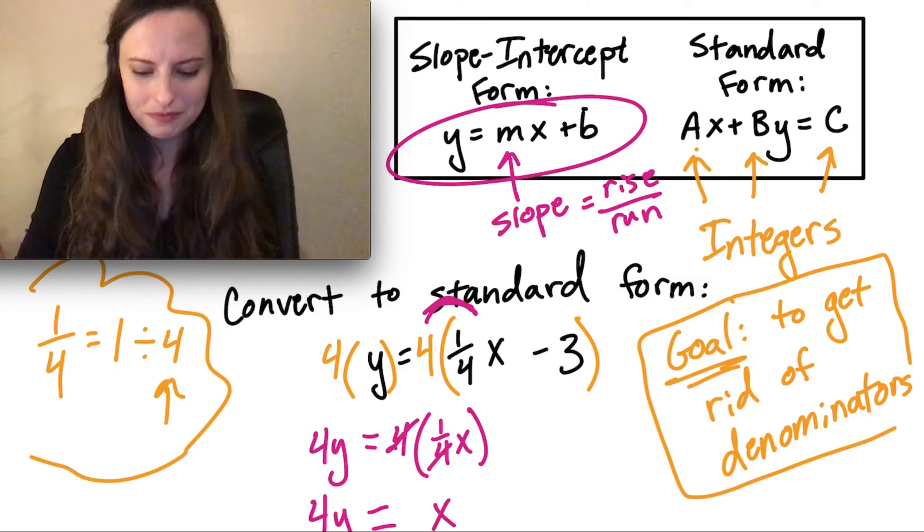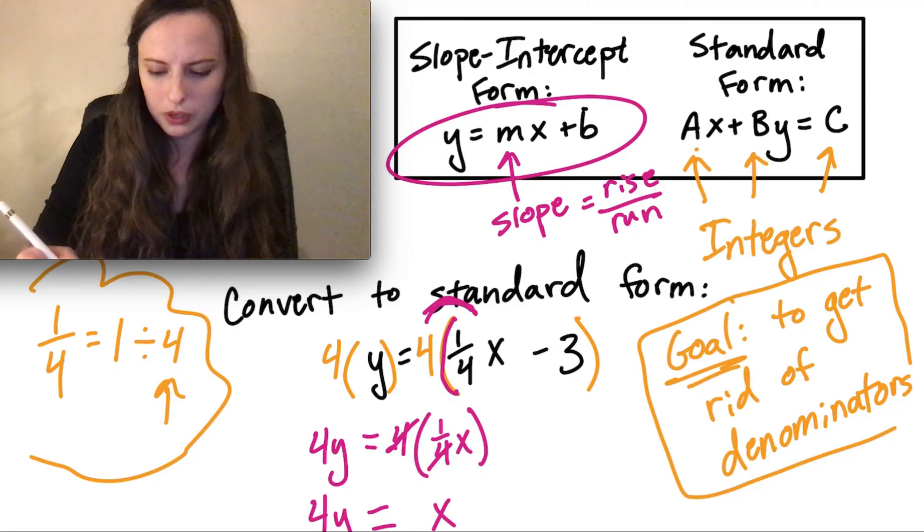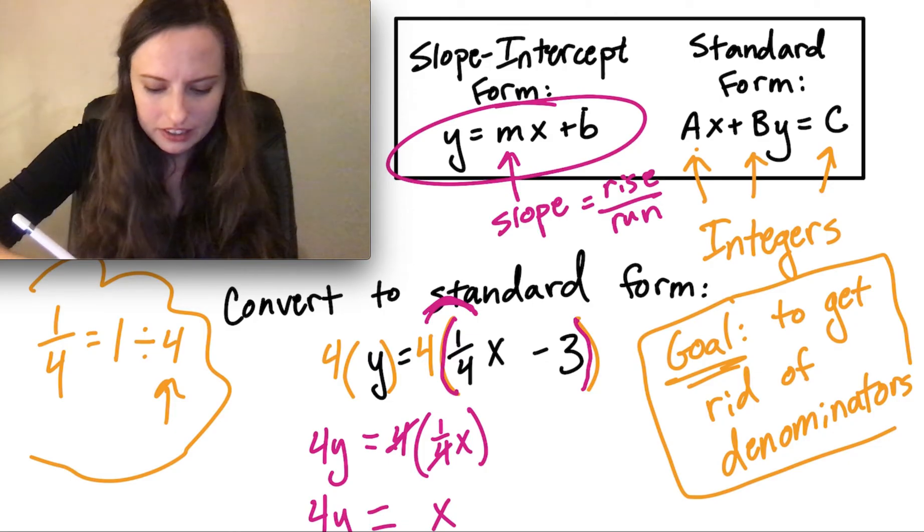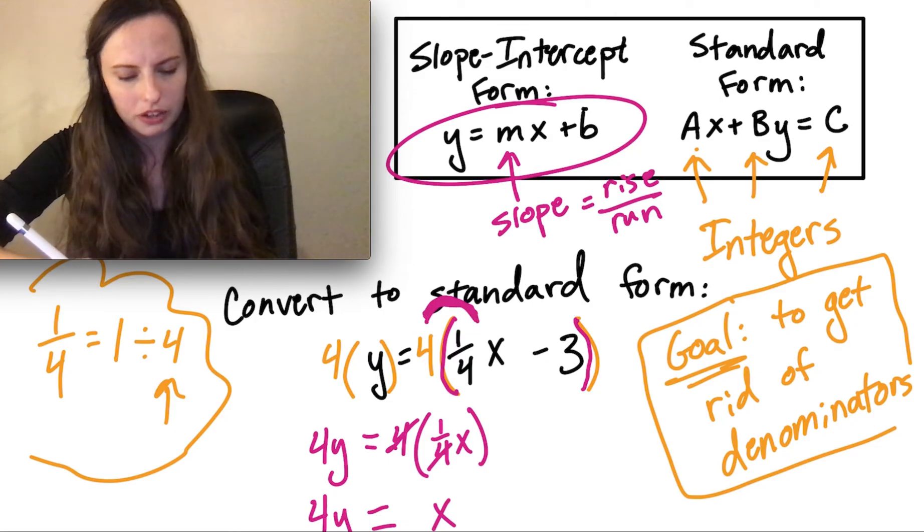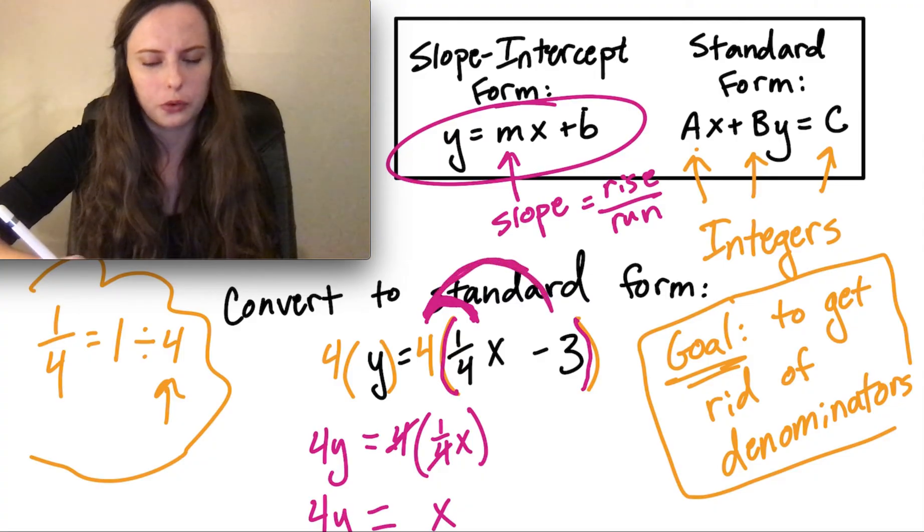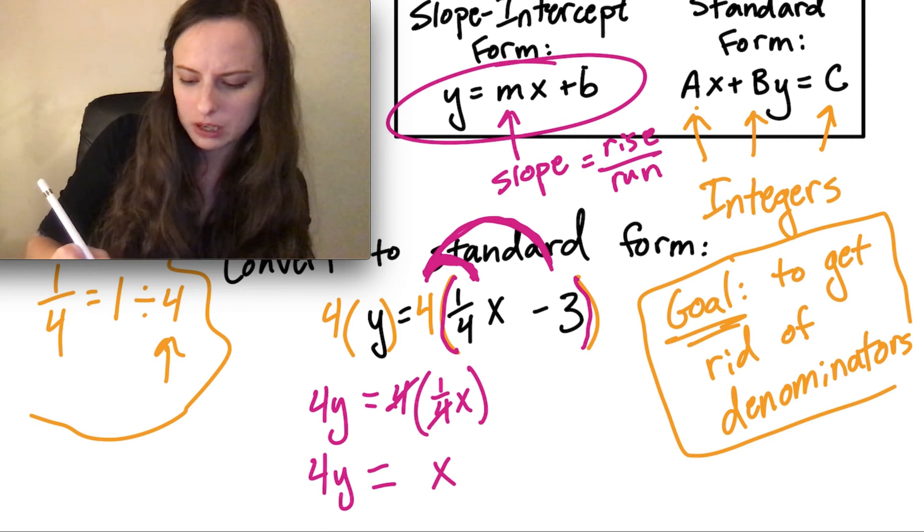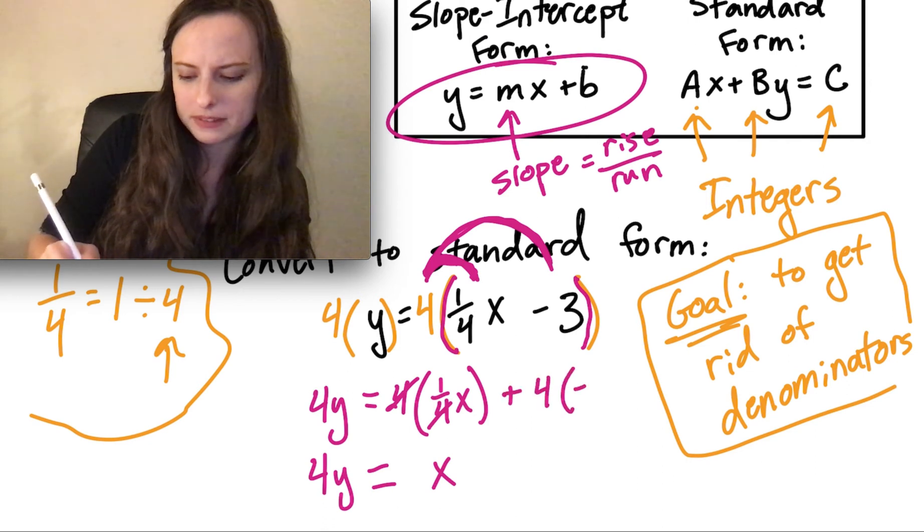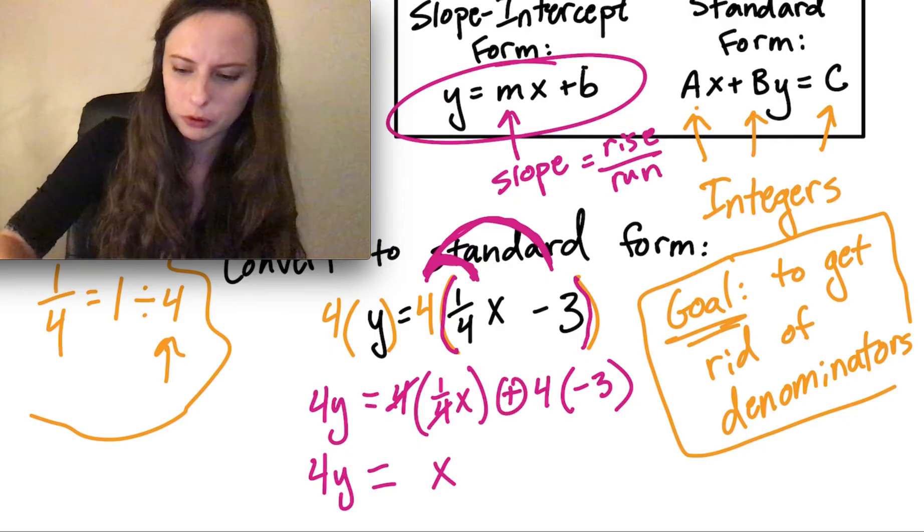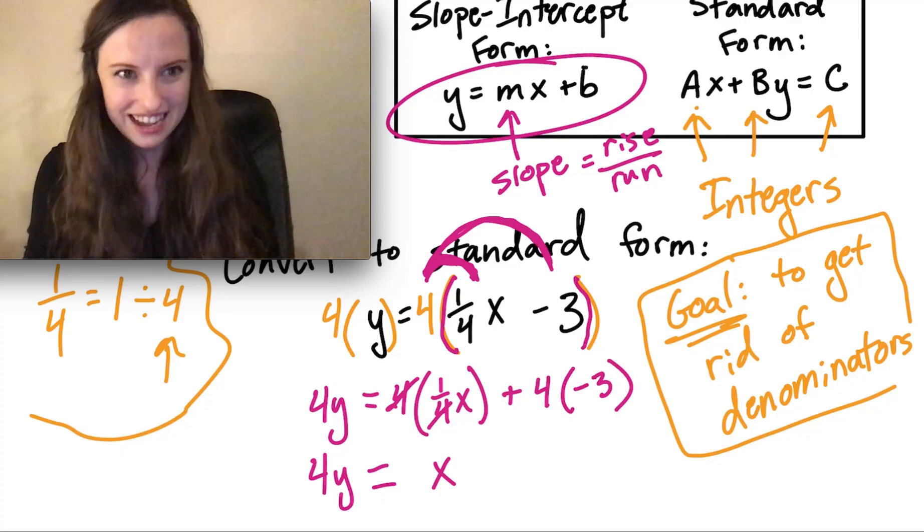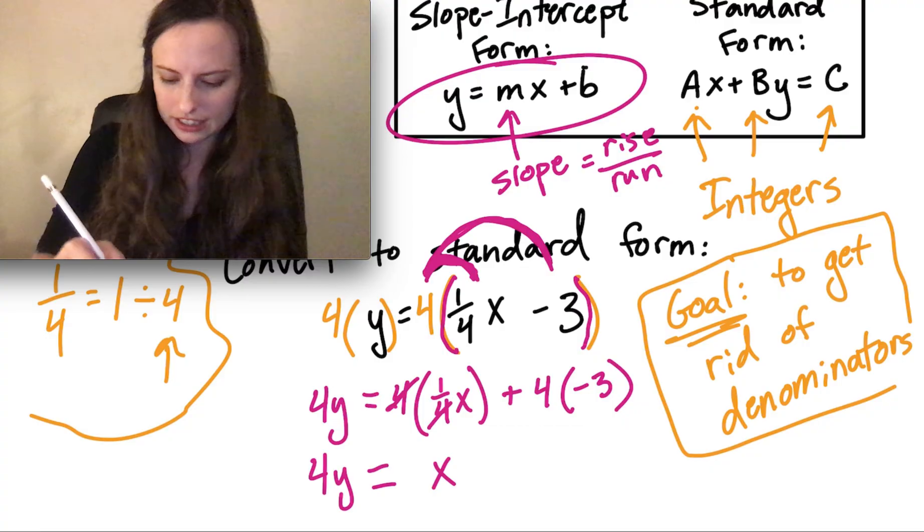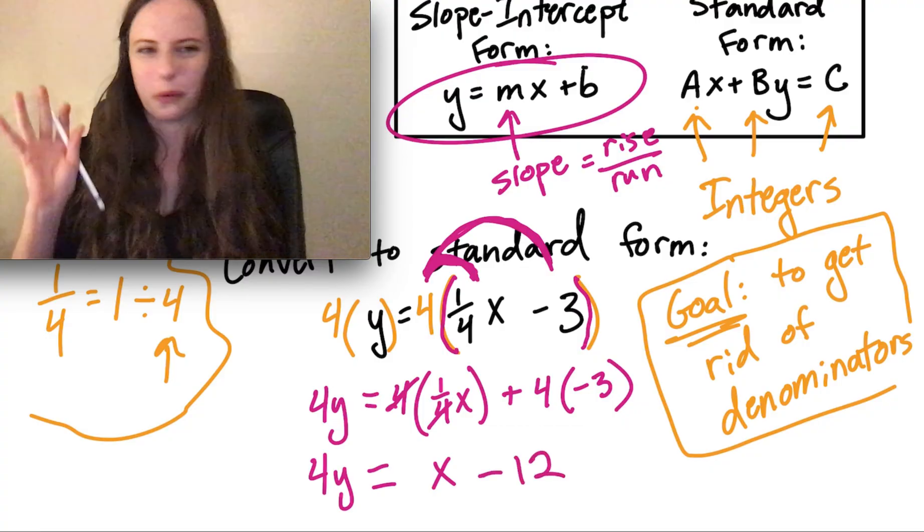Now, we're not done. Remember how we put all of this in parentheses. And what that signals to us is that that 4 doesn't just multiply times the 1 fourth x. It also multiplies times the negative 3. So here, we also have to have plus 4 times negative 3. So it's a plus here because it's a positive 4. So plus 4 times negative 3, which came from the equation. So 4 times negative 3 is negative 12.